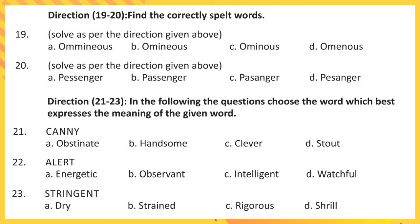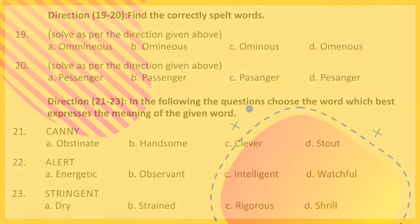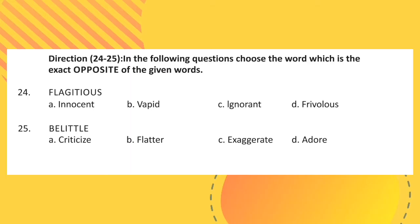Direction for questions 19 and 20: Find the correctly spelled words. In the following questions, choose the word which best expresses the meaning of the given word. Question 19. Direction for questions 24 and 25: In the following questions, choose the word which is the exact opposite of the given word. Question 20.